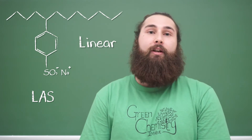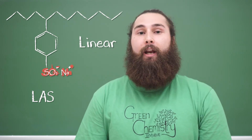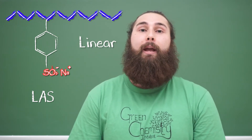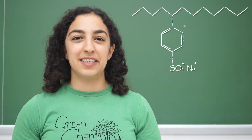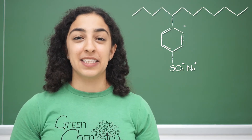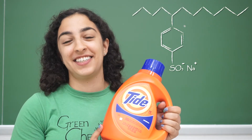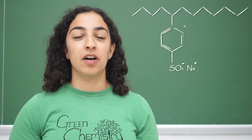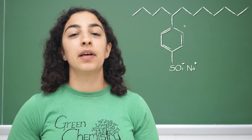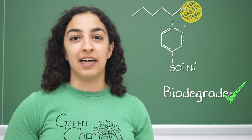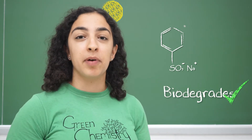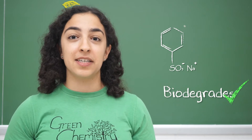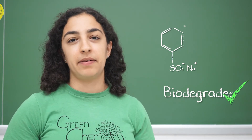It's used as a detergent because it has a polar head group, the sulfonate, and a non-polar alkyl chain, making it a surfactant. LAS is used in many things, especially in laundry detergents. It's able to break down in the environment under aerobic conditions, or when oxygen is present. Microbes are able to use the linear alkyl chain as energy via a process called beta-oxidation, which breaks down the carbon chain. Once the long chain has been degraded, the rest of the molecule can be degraded as well.